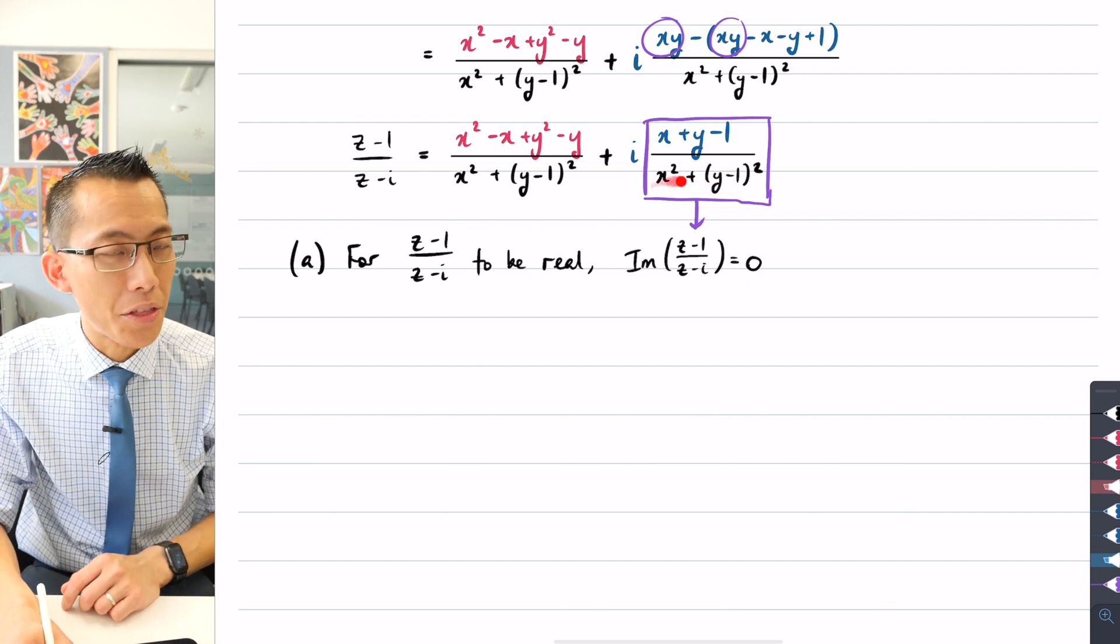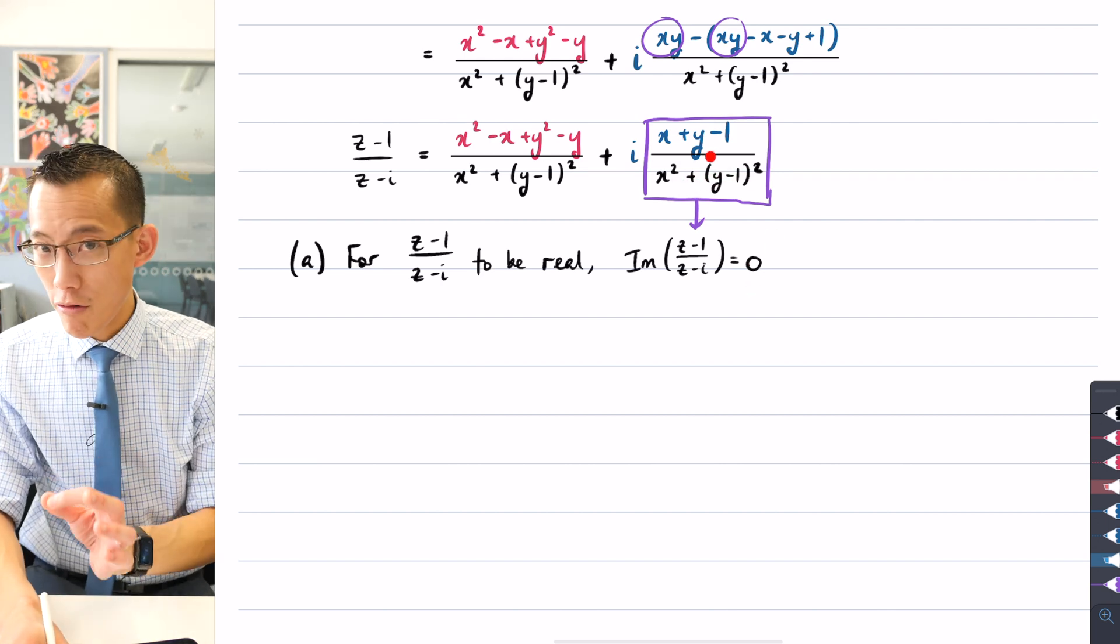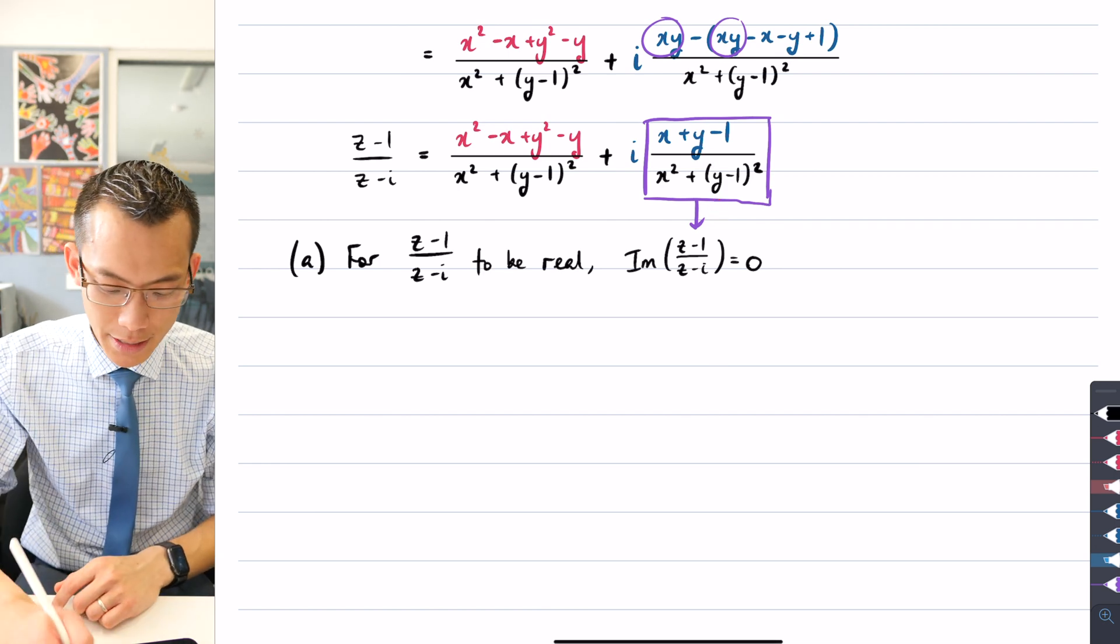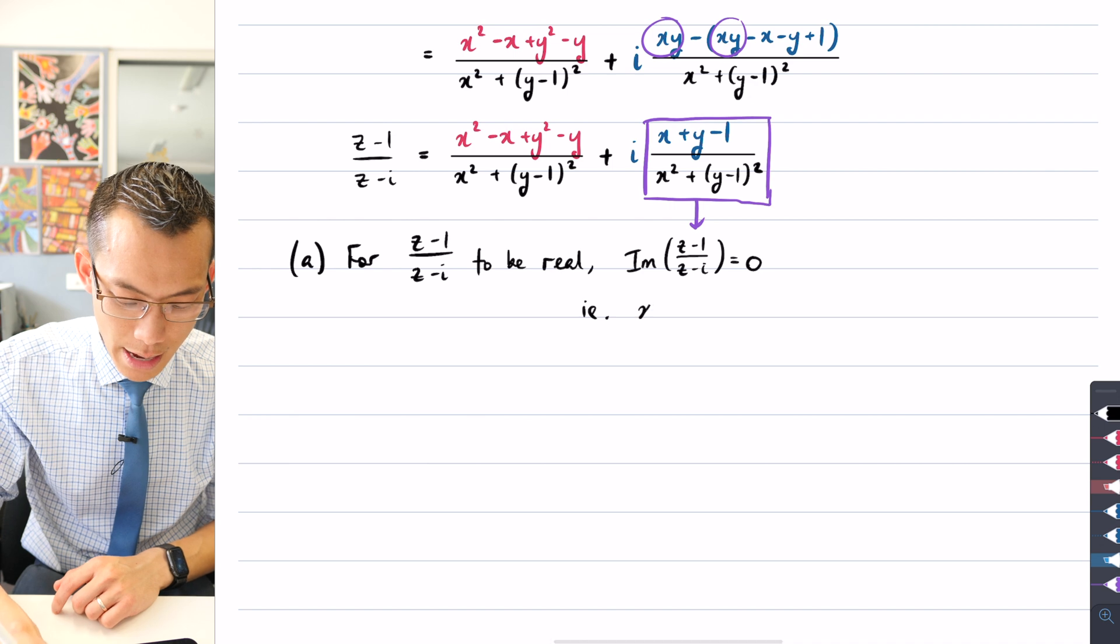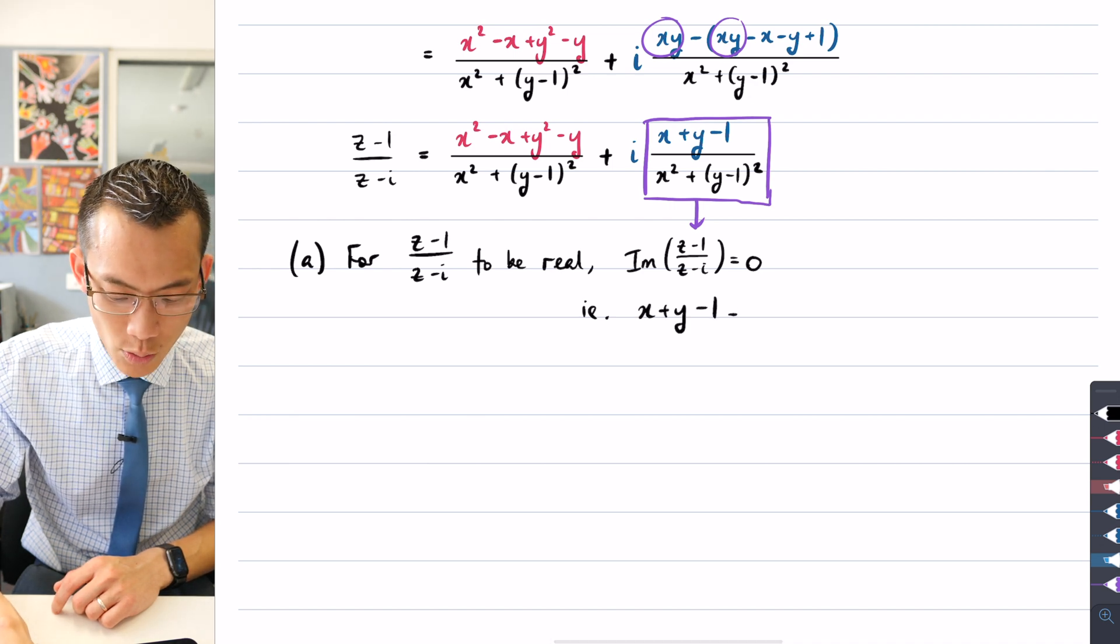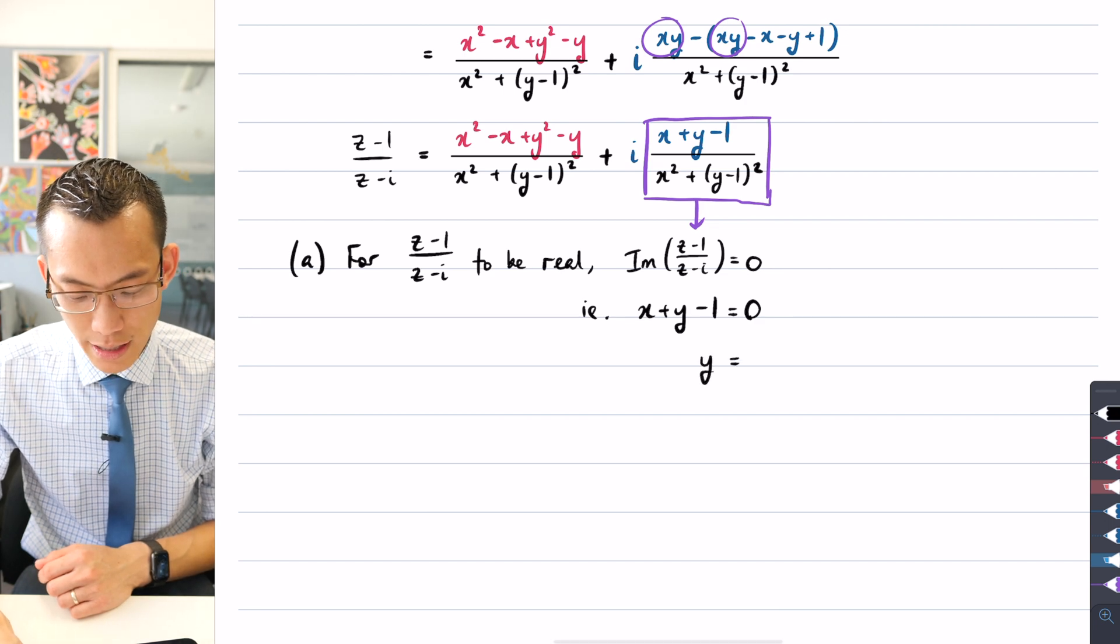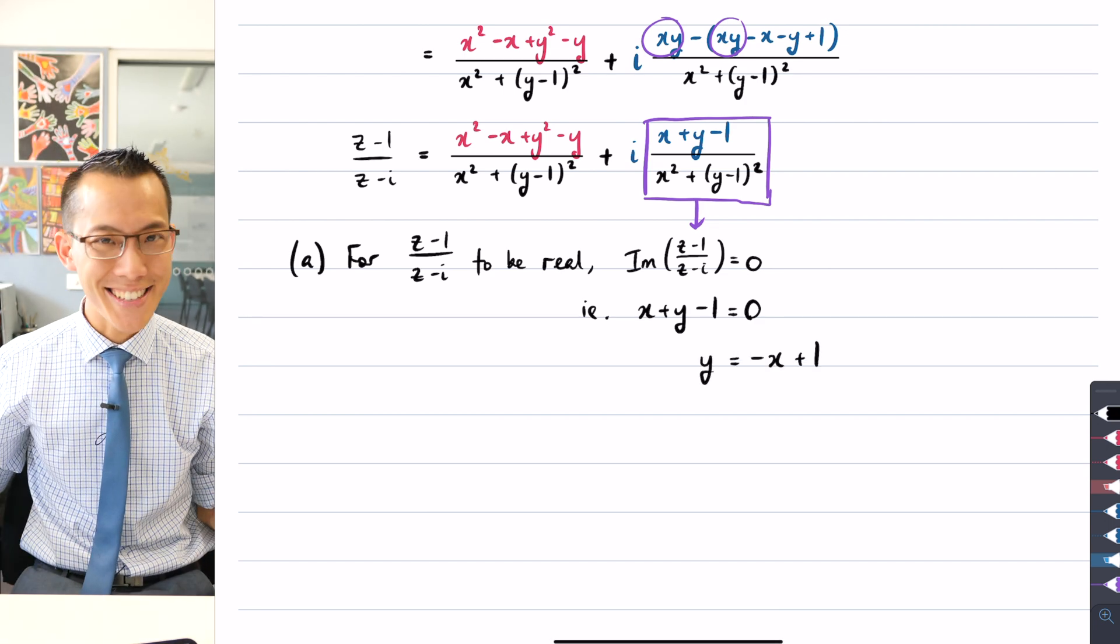Now I hope you can agree that it doesn't matter what the denominator is equal to, as long as the numerator is zero, then the whole thing will be zero. So therefore I can say x plus y minus 1 equals zero, and I can just tidy this up a little bit, make y the subject.